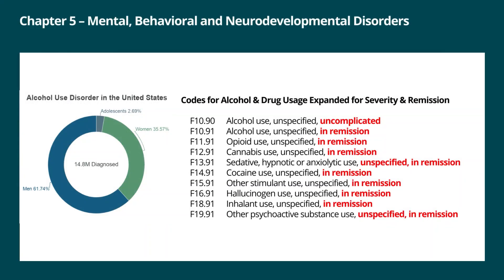The second set of codes updated in chapter five are for alcohol and drug usage. These codes now include additional information such as severity and whether the patient is in remission, which was not previously available. For example, F10.90 is alcohol use unspecified and uncomplicated, while F10.91 is alcohol use unspecified in remission. The 'in remission' and 'uncomplicated' designations are newly introduced into the code sets.